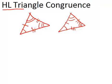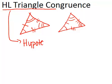HL triangle congruence is one of those shortcuts. HL stands for hypotenuse leg. So this shortcut, the hypotenuse leg shortcut, only works for right triangles.